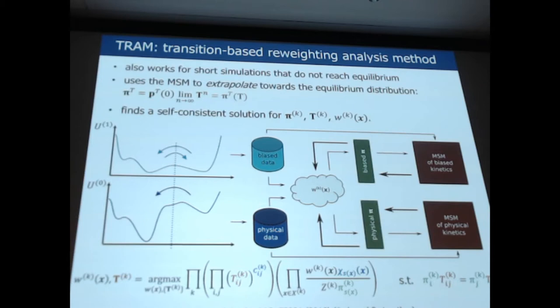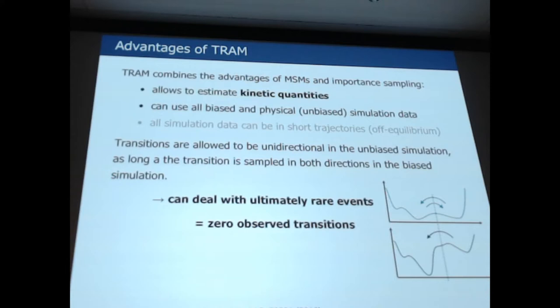So what are the advantages of this method? One big advantage is that it predicts kinetic quantities, not only free energies. It can use all the data, bias and the physical data, in a fashion which is statistically optimal, by having this network of connections, everything connects to everything else. So there's a possibility to get the most out of the data by letting the information flow everywhere. But most importantly, the main advantage of this method is that it can heal this ultimate rare event. Assume that you have your physical simulation and you only see transitions in one direction. As long as there is a second simulation in a bias potential which allows you to gain information about the free energies of the two states, it's possible to estimate or to calculate the back rate in the physical ensemble.